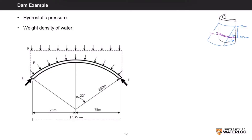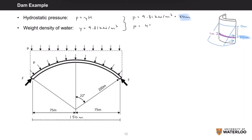The equation for hydrostatic pressure is given by P equals gamma H, with units of kilopascals. Gamma is the weight density of water, which is 9.81 kilonewtons per meter cubed, and H is the depth in meters. In the problem, we're told that the strip is at a depth of 50 meters, so applying these values to our equation, we get a pressure of 490 kilopascals.